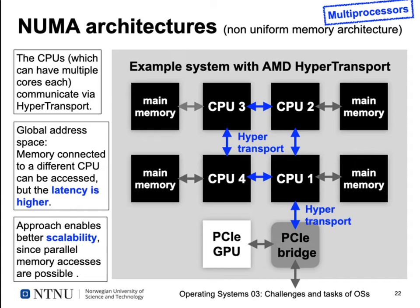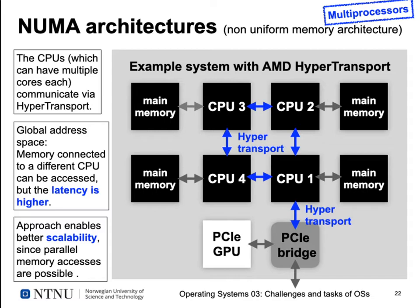There is a global address space — even though each CPU has its own memory, any CPU can access another CPU's memory using HyperTransport, but with higher latency. If CPU 4 accesses its own local memory it is fast; if it needs to go through CPU 1 to access that CPU's memory, it takes more time. This approach has advantages: better scalability and parallel memory accesses from all CPUs, so we don't have to wait as long.